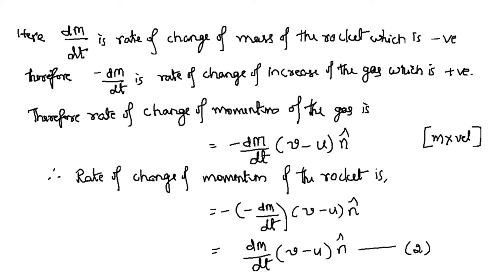Now, as I mentioned, dm/dt is the rate of change of mass of the rocket, which is negative as the rocket's mass decreases as fuel is consumed. As a result, −dm/dt is the rate of change of increase of the escaping gas, which is positive because the amount of escaping gas goes on increasing. Therefore, we can find the rate of change of momentum of the gas as its rate of change of mass (−dm/dt) times its velocity with respect to earth (V − U)N̂. In short, the rate of change of momentum of the gas is −(dm/dt)·(V − U)·N̂.